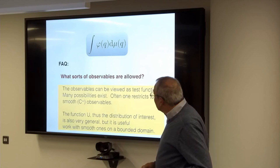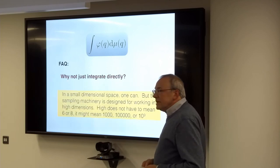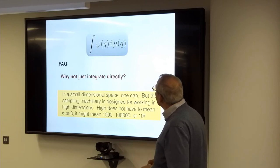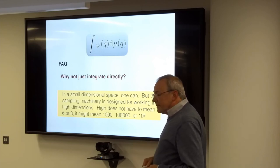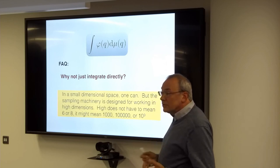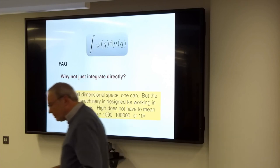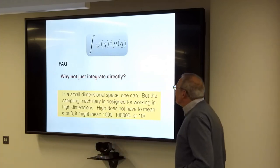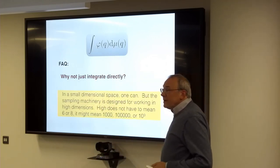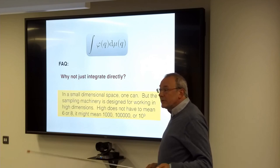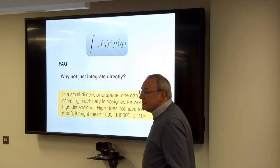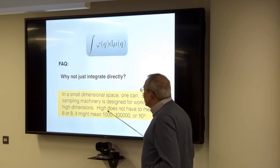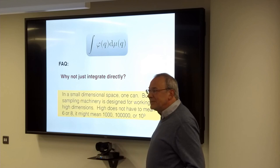Why not just integrate directly? If I have this integral, why not calculate it by one of the direct methods or by discretizing? The thing is that we'd like to be able to do very large-dimensional problems. In small dimensions we can use common quadrature schemes, but for large-dimensional problems we can't. And large here doesn't have to mean what mathematicians usually mean — it could mean a billion.